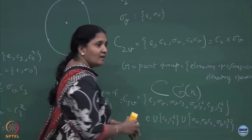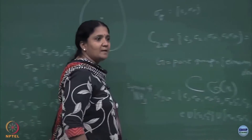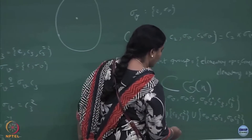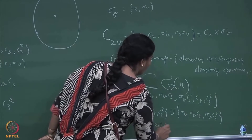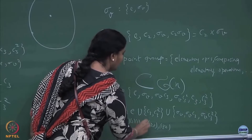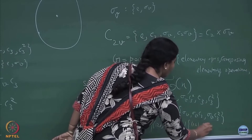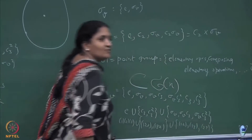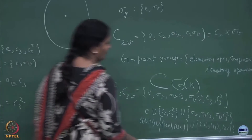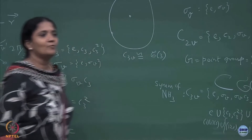One can rewrite the group elements as b, b², a, ab, ab², and also express them in the permutation group of 3 objects: the cyclic permutations (1 2 3) and (1 3 2) form one class, the identity (1)(2)(3) is another, and the transpositions (12), (13), (23) form the third. Therefore C3v is isomorphic to the symmetric group of degree 3.